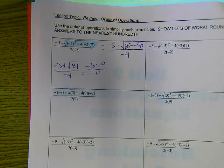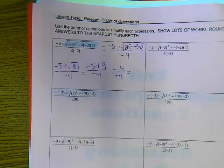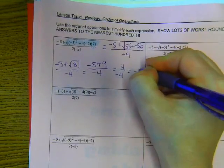What do you have to do first? Negative 5 plus 9. What is negative 5 plus 9? 4. 4 divided by negative 4 is negative 1.